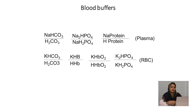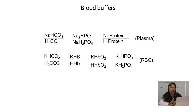When writing a buffer, the conjugate base is written on top and the acid is written below. For example, for bicarbonate buffer, carbonic acid is written below as the acid component, and its conjugate base — the bicarbonate ion — is written on top. In the same way, the composition of phosphate buffer and protein buffer are also represented.